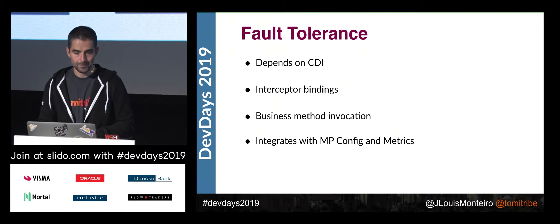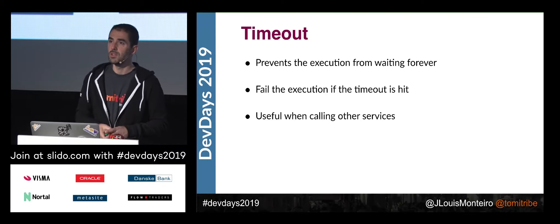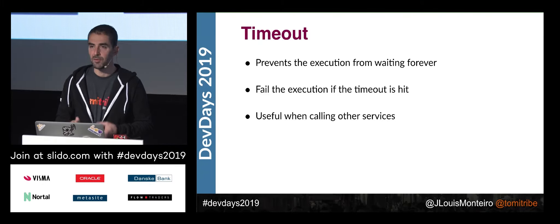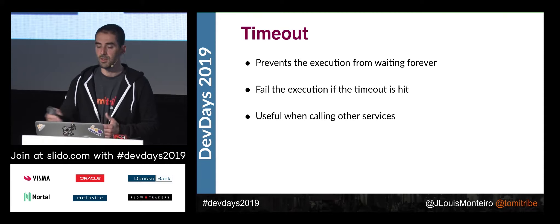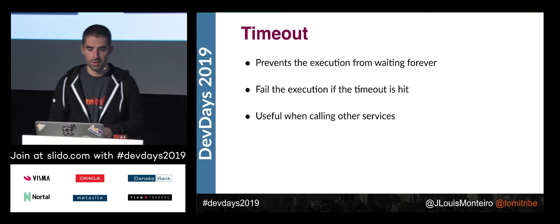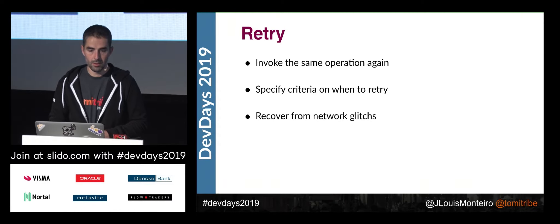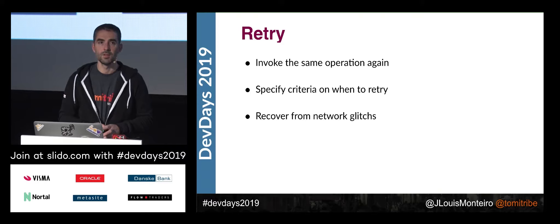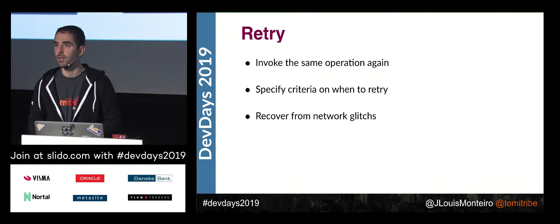The first fault tolerance mechanism is Timeout — used when a service is responding but taking too long. If you have SLAs to meet, such as in payment systems, you don't want to depend on another service for too long, so if the invocation takes too long we cut the connection. Retry is very useful if you have network glitches — if the network is sometimes available and sometimes not, you can define a retry that reacts on certain exceptions and makes another call to ensure you get your information.